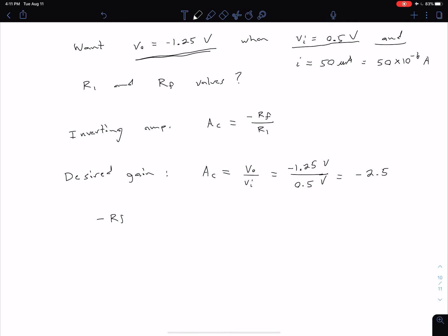So now we just equate these two equations for our closed-loop gain. And we see that we have negative RF over R1 is equal to negative 2.5. Or we can get rid of our negative signs and just say that RF over R1 is equal to 2.5.